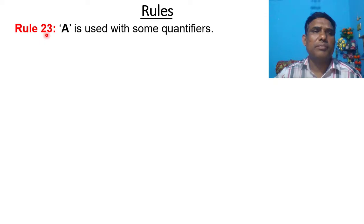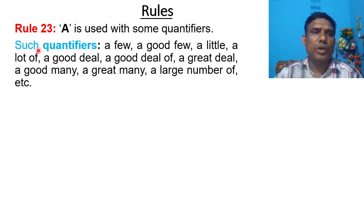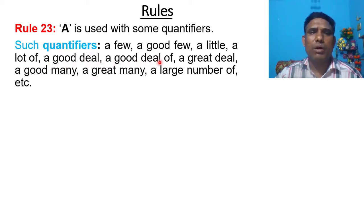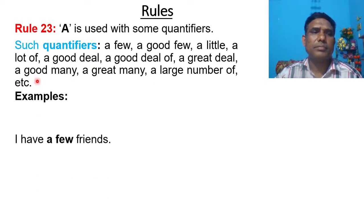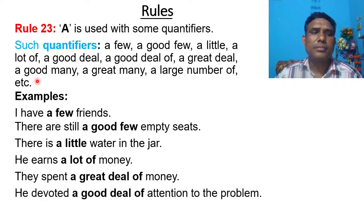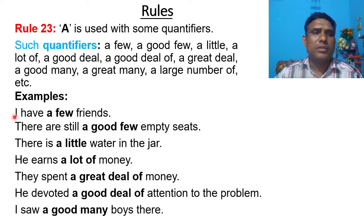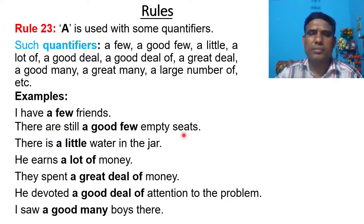Rule number 23: A is used with some quantifiers. Such quantifiers are: a few, a good few, a little, a lot of, a good deal, a good deal of, a great deal, a good many, a great many, a large number of, etc. For example: 'I have a few friends.' 'There are still a good few empty seats.' 'There is a little water in the jar.'